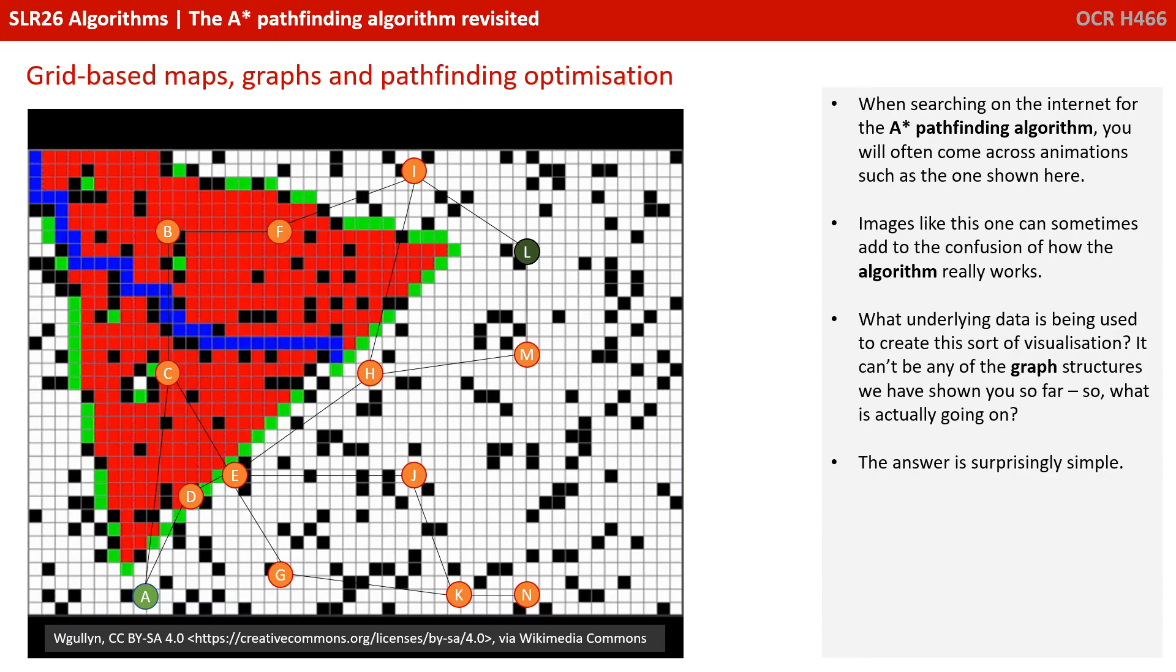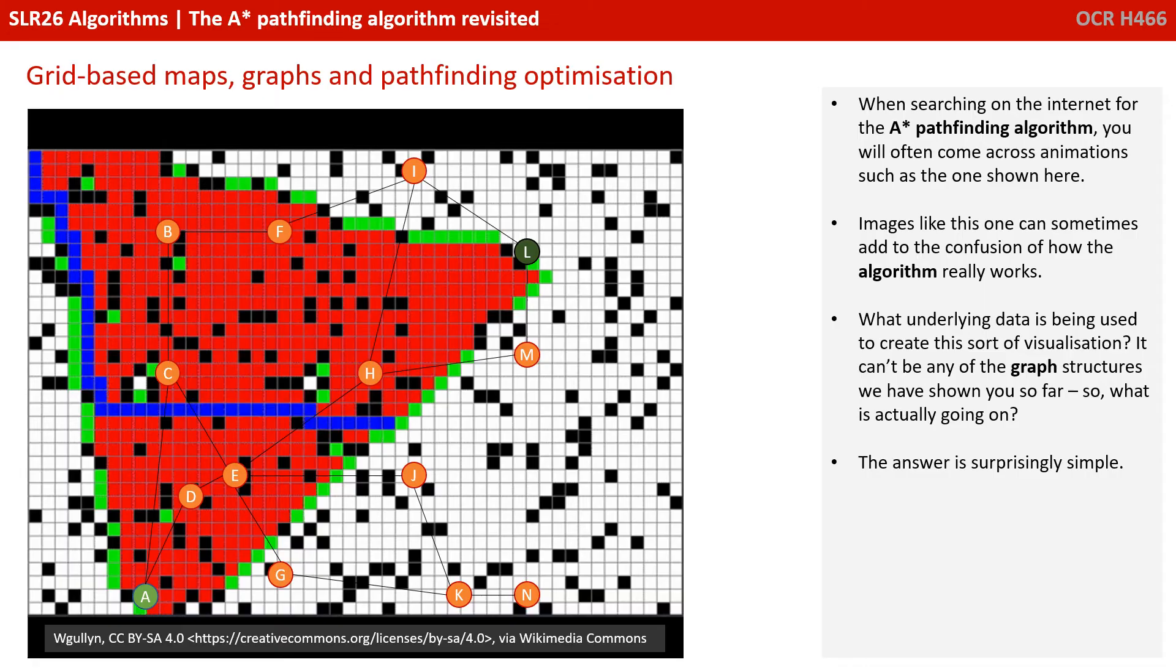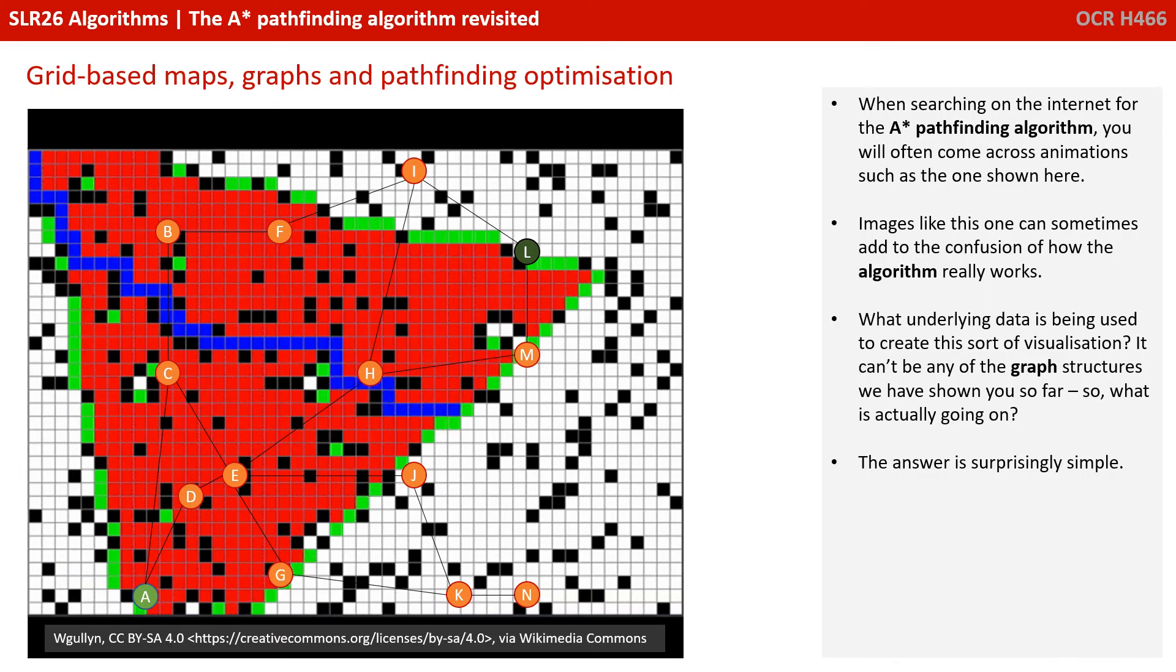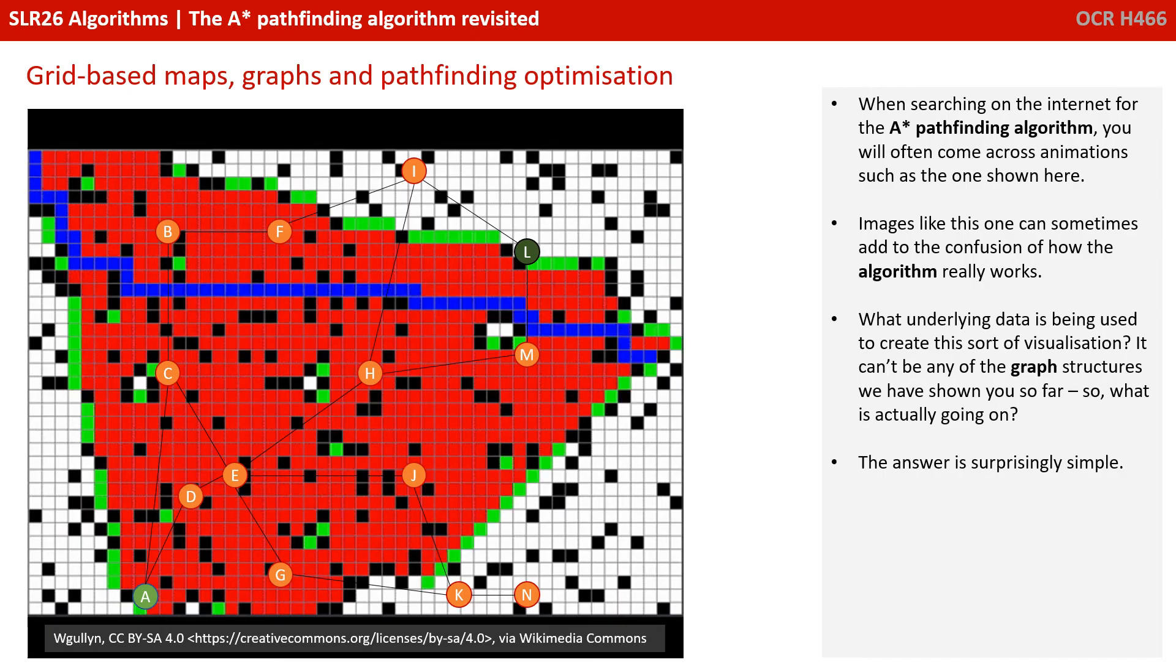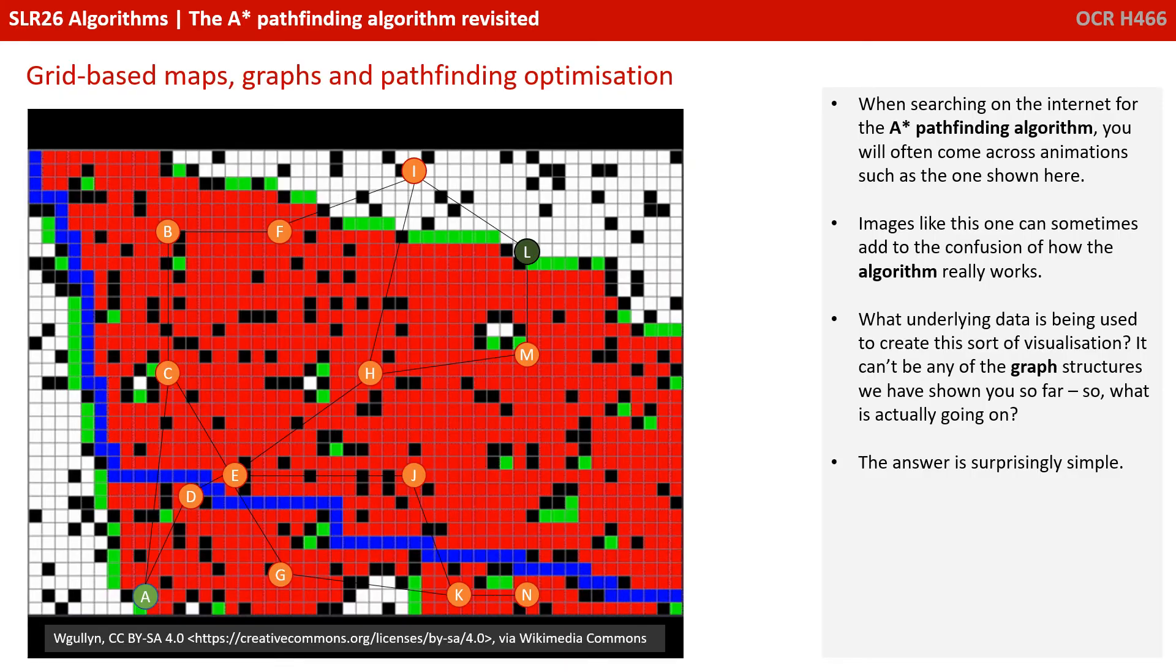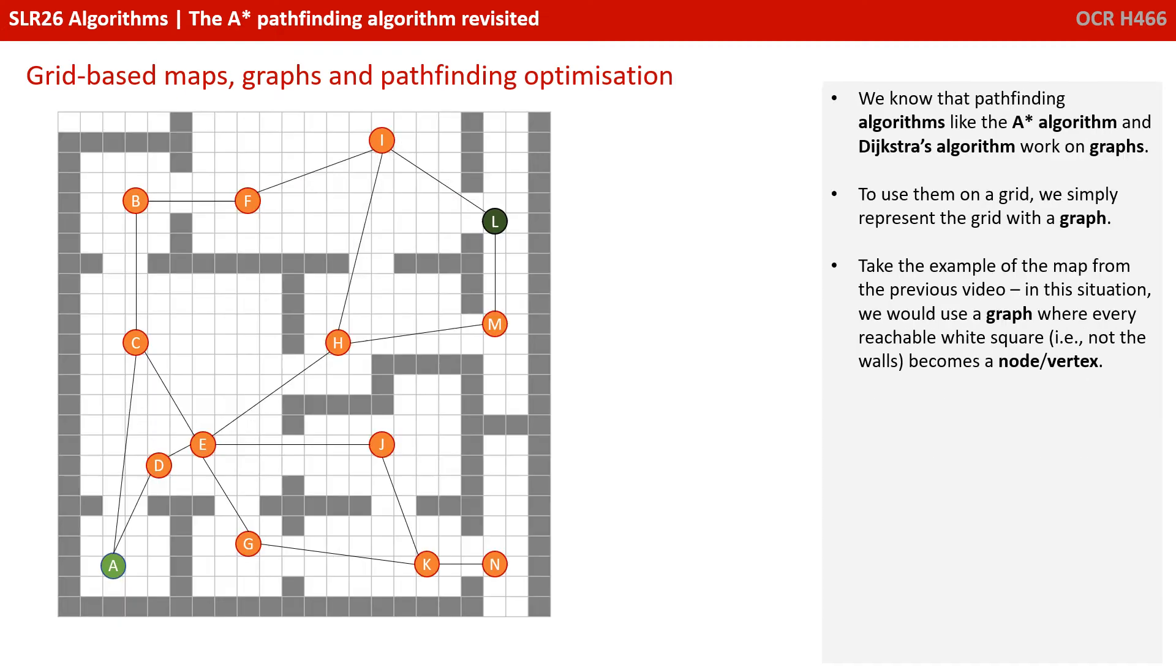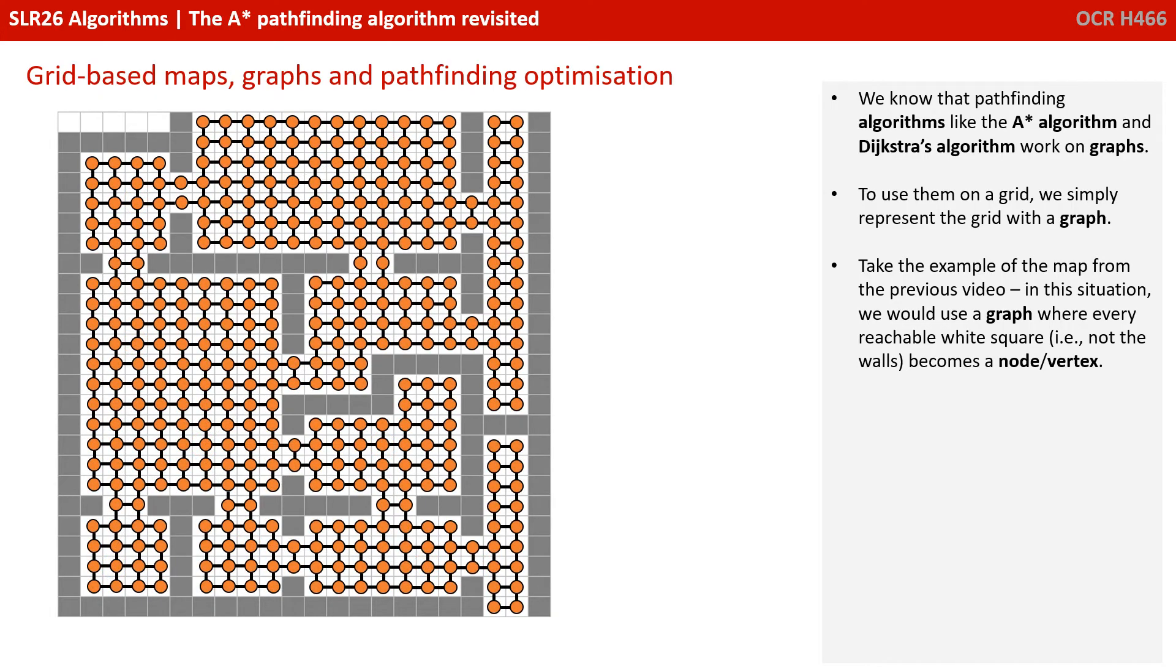Images like this one can sometimes add to the confusion of how the algorithm really works. What underlying data is being used to create this sort of visualisation? It can't be any of the graph structures we've shown you so far, so what is actually going on? Well, the answer is surprisingly simple.